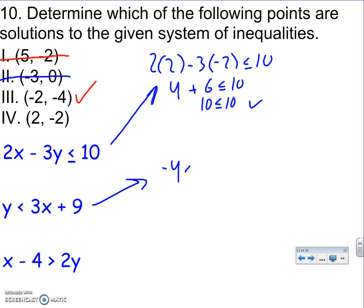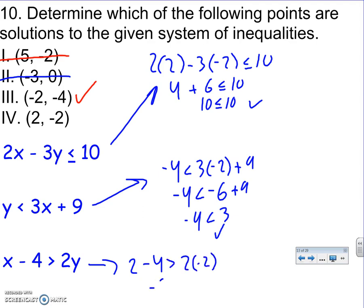So -4, less than 3, times -2, plus 9. -4, less than -6, plus 9. -4, less than 3. That is true. I'll try the last one. 2, minus 4, and then 2 times -2. That is -2 is greater than -4. That's also true. So that's true. Both of these are my answers. 3 and 4.